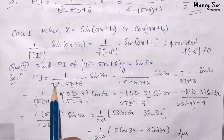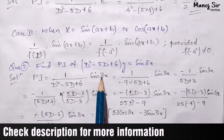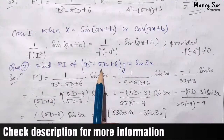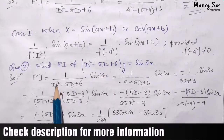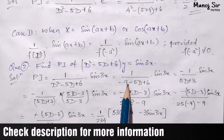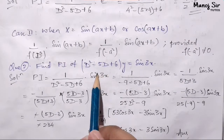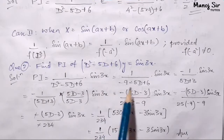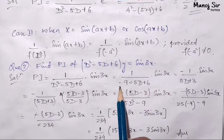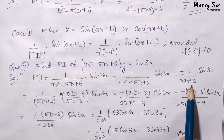Since here we can see D squared, in place of D squared we are going to write the square of 3, that is 9, with a negative sign — that is minus 9. So in place of D squared we write minus 9. The rest will be as it is.